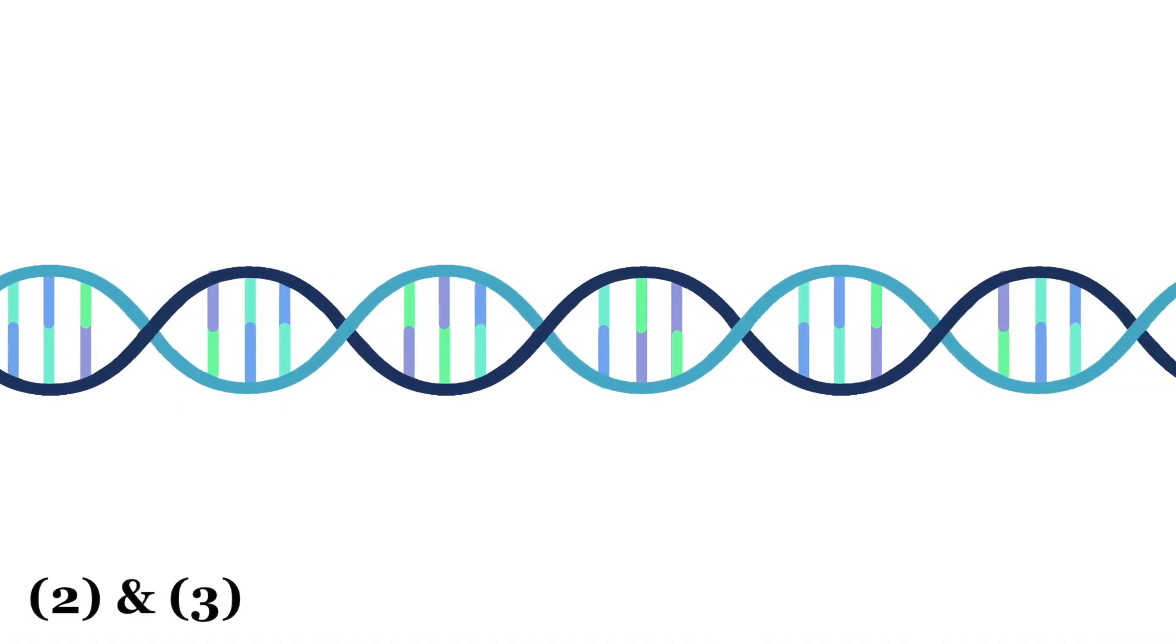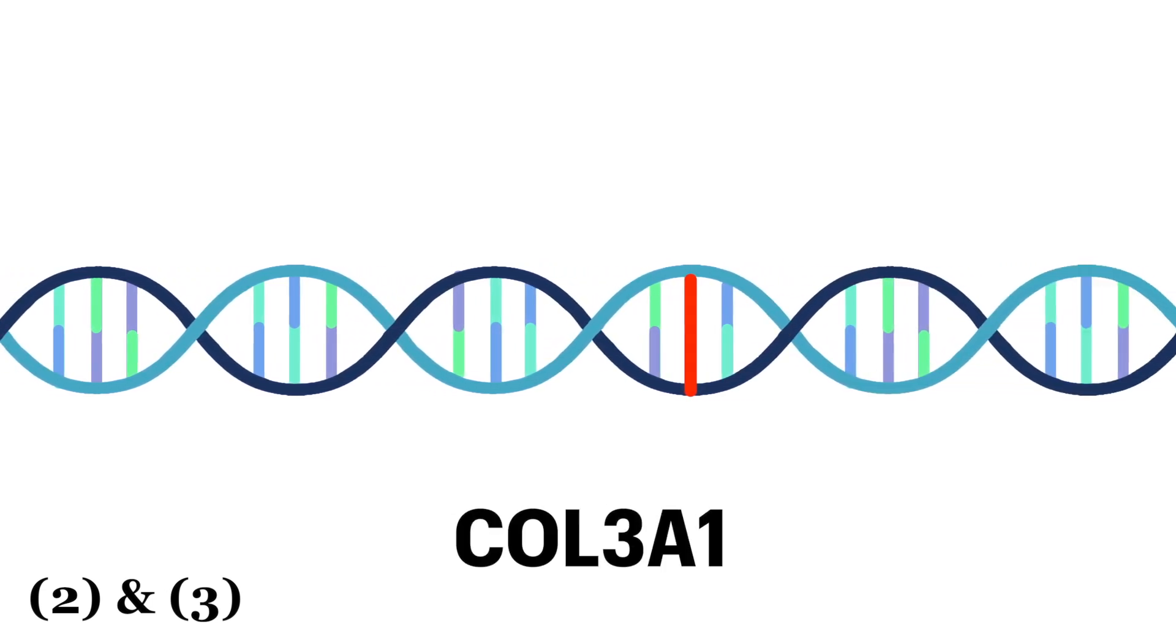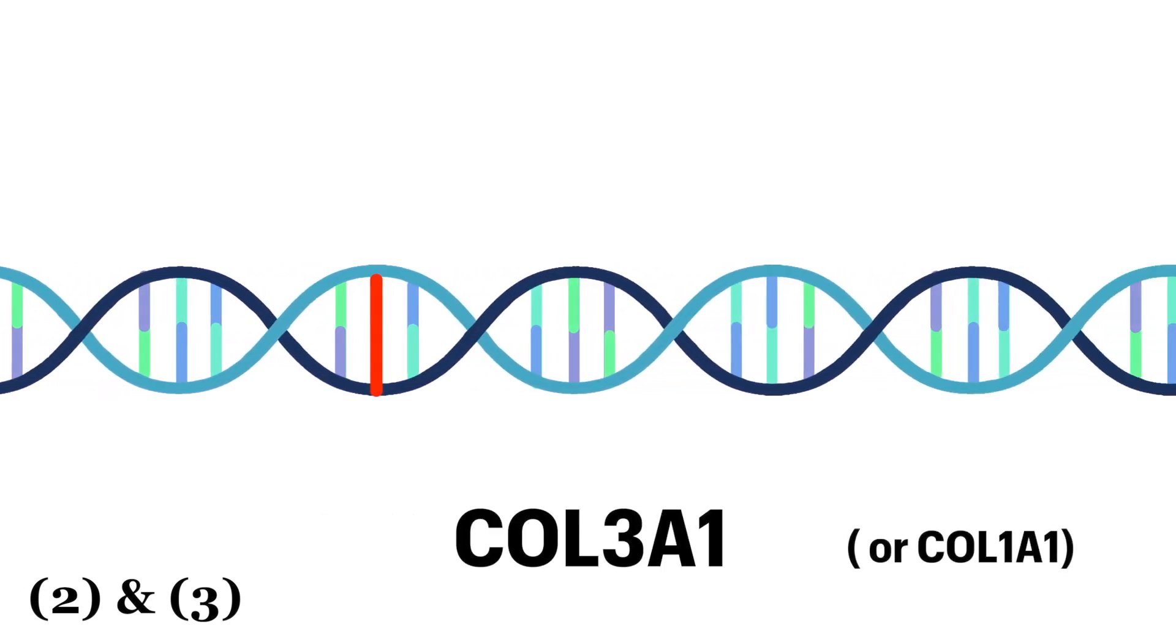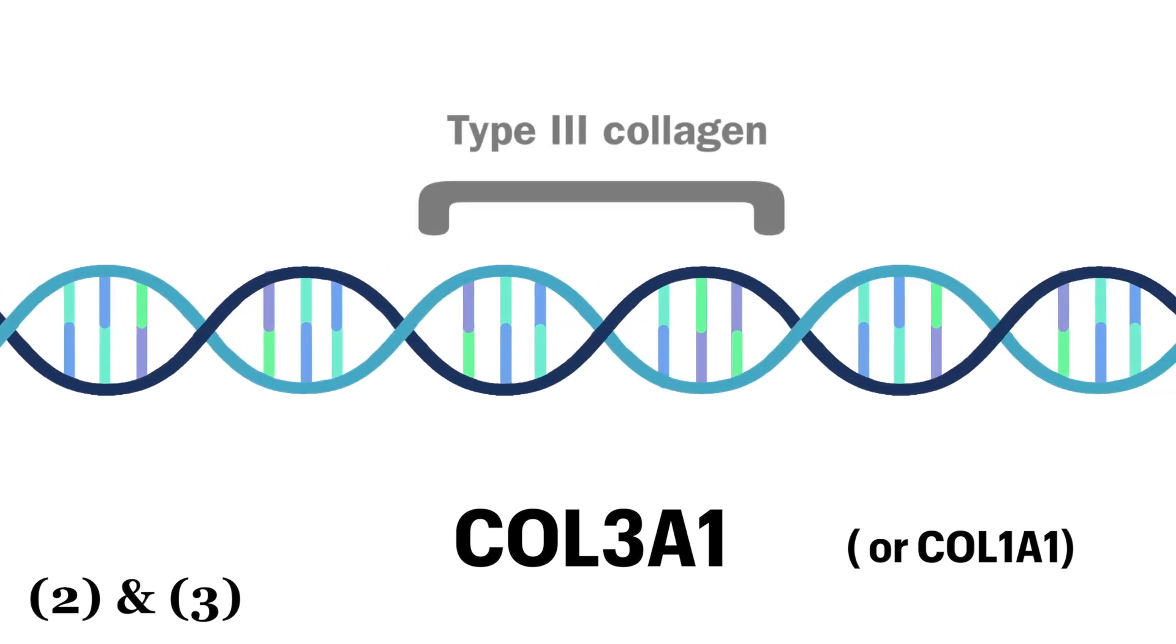So it all starts in the genetic code. Vascular Ehlers-Danlos Syndrome is caused by mutations present at birth in the Col3A1 gene and rarely the Col1A1 gene, which are just fancy names for certain areas in the DNA. These genes code for type 3 collagen protein.